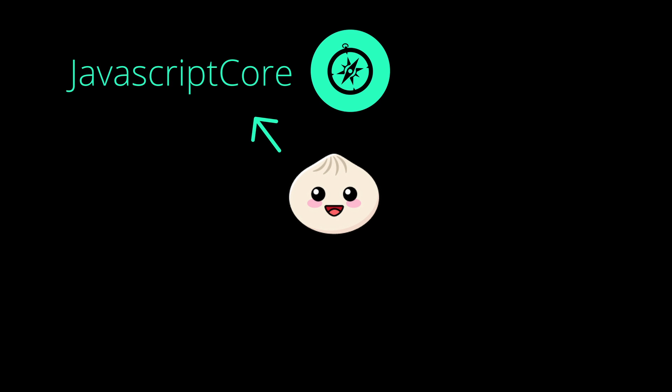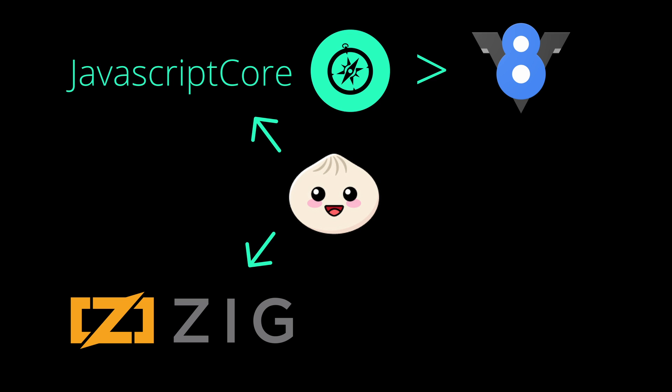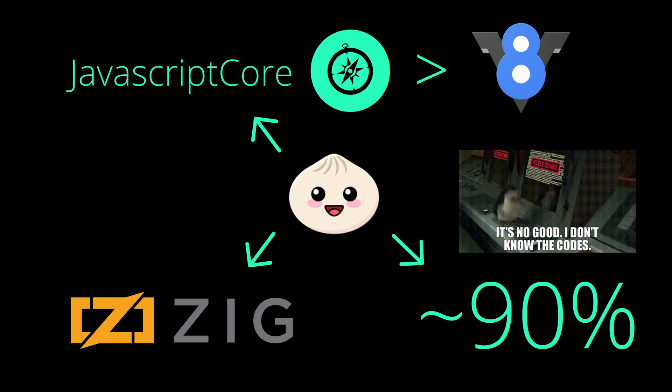And this is where Bun comes in. Bun likes to use the JavaScriptCore engine, which gives it a bit of an edge over V8. Then it goes down to the depths of low-level programming with Zig, so it can do mad optimization. And after that, it uses around 90% of the Node API functions, so you won't have to rewrite a lot of code.